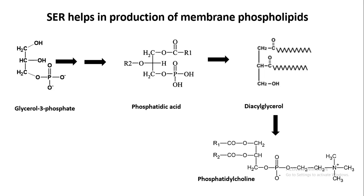Smooth endoplasmic reticulum or SER is very important for production of membrane phospholipids. Inside the SER, glycerol-3-phosphate via several steps gets converted into phosphatidic acid, which is then further converted to diacylglycerol. From diacylglycerol, it can attach to choline, ethanolamine, or serine to form phosphatidylcholine, phosphatidylserine, or phosphatidylethanolamine, which are all important membrane phospholipids that are then delivered to the membranes.